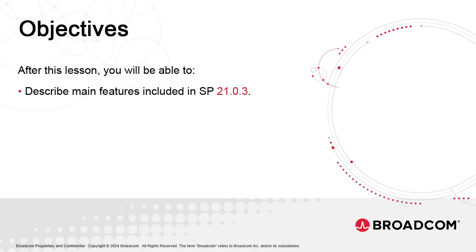As such, they'll have dedicated slides. Others are minor and we list them for awareness. They will be listed in black and will not have dedicated contents. All items are grouped together by components: Atomic Automation, Kubernetes Edition, AWI, Agents and so forth.